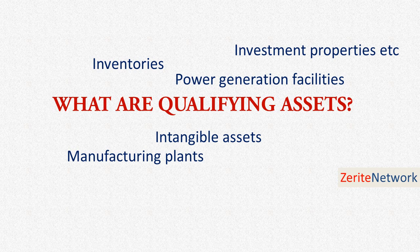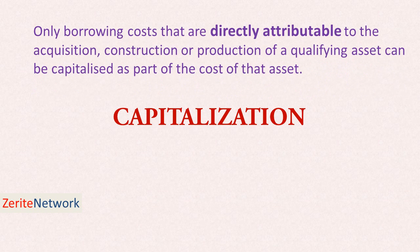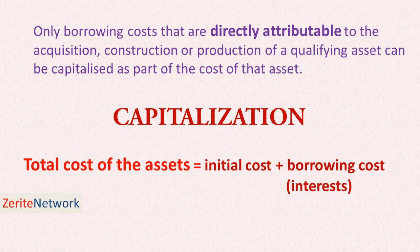Assets that are ready for their intended use or sale when purchased are not qualifying assets. Capitalization involves adding borrowing costs to the cost of assets. Only borrowing costs that are directly attributable to the acquisition, construction, or production of a qualifying asset can be capitalized as part of the cost of the assets. Therefore, total cost of the asset equals initial cost plus borrowing cost, that is, interest.